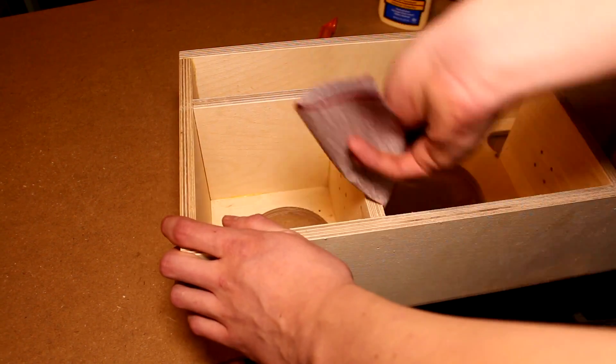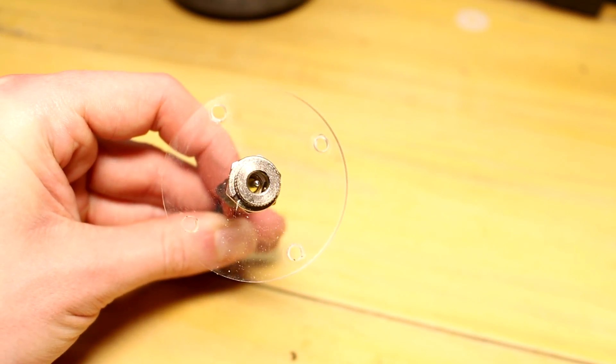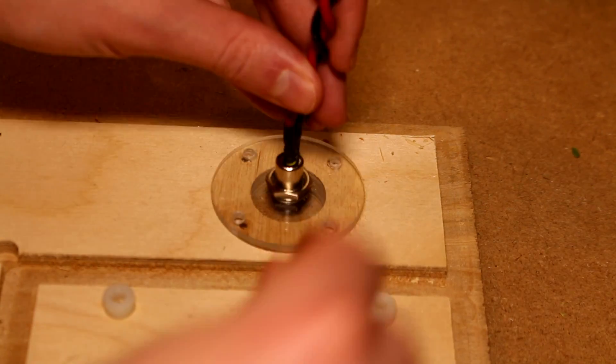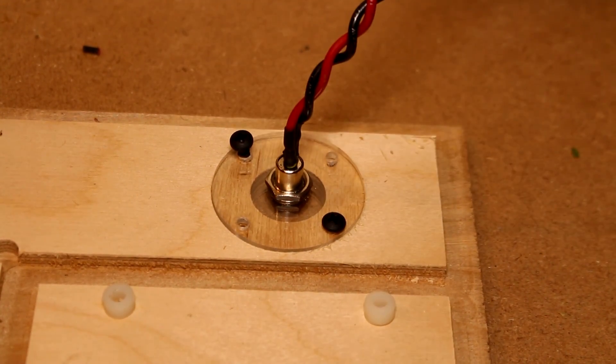I left the back panel for last so I could easily install the DC power inlet. This piece would be almost impossible to install with the back panel on because of how small the cabinet is on the inside.